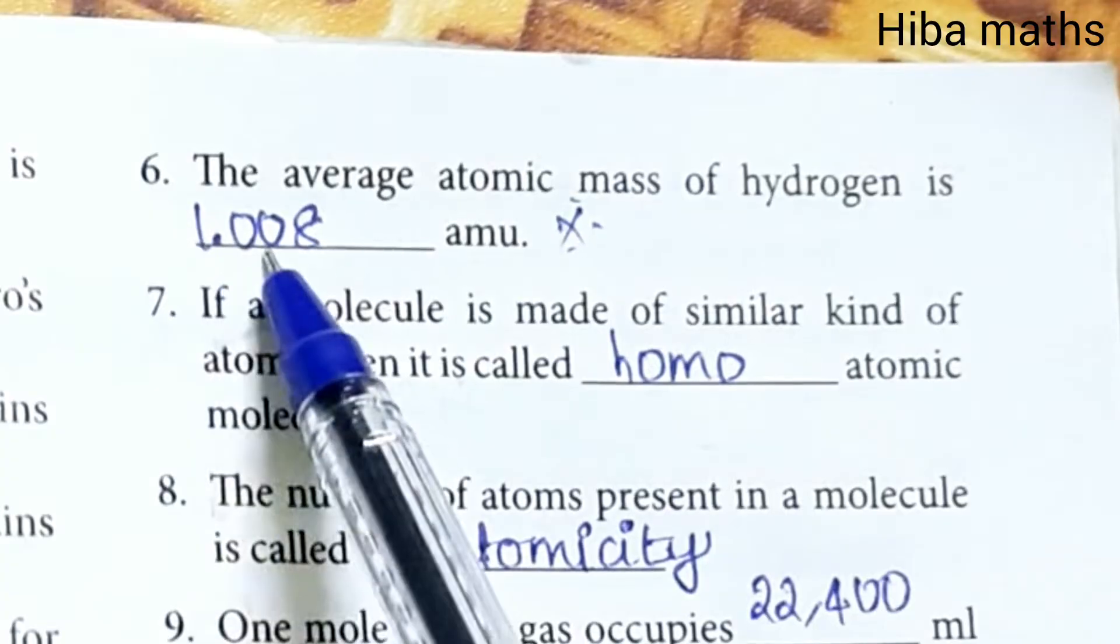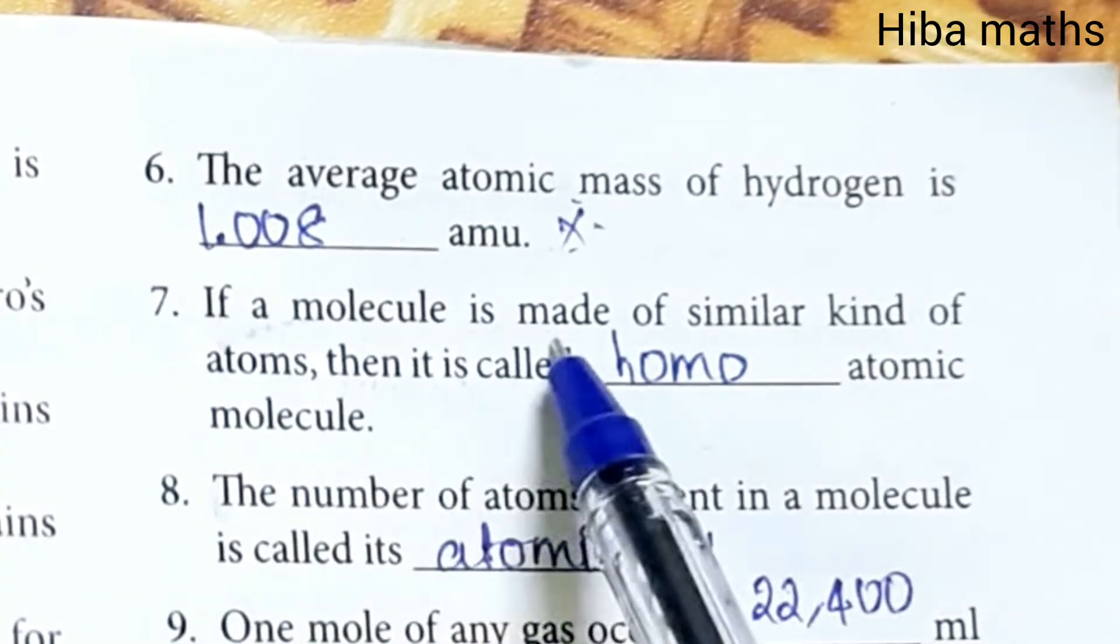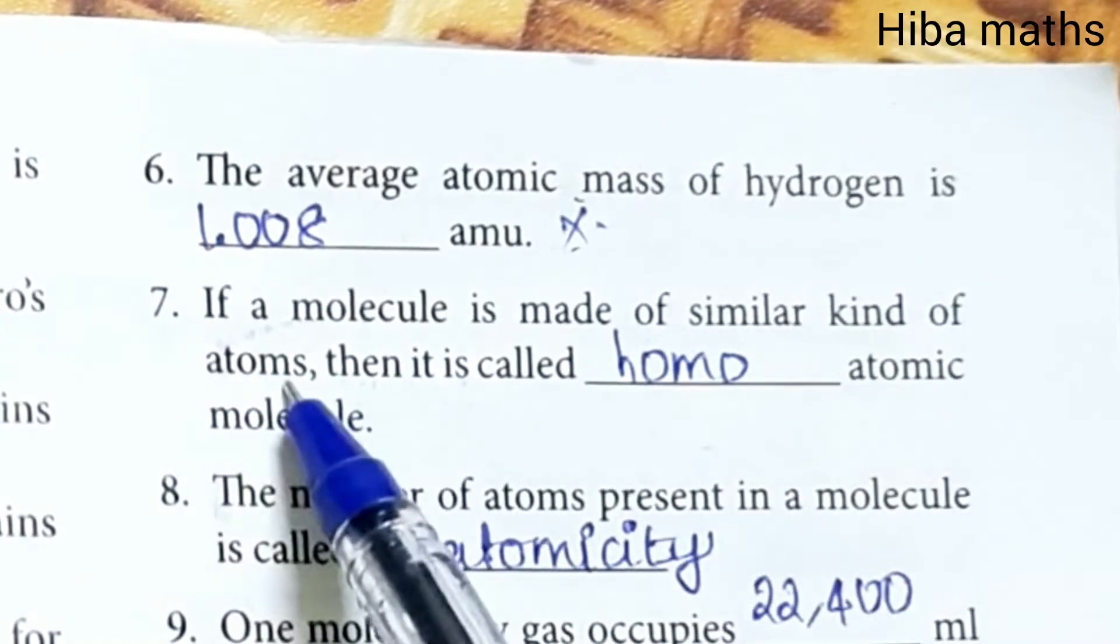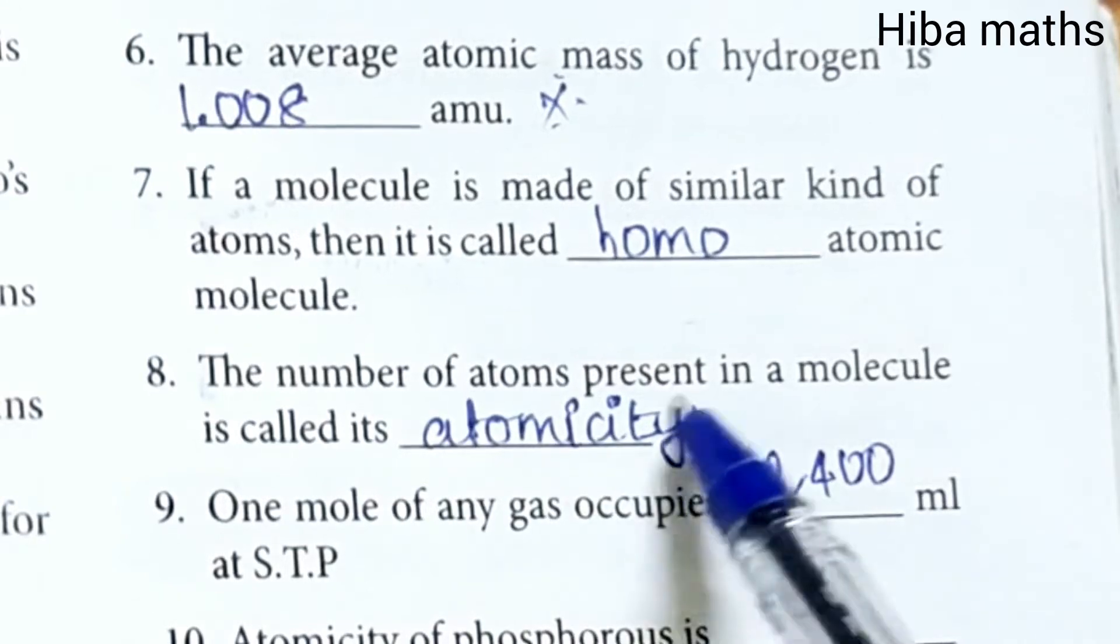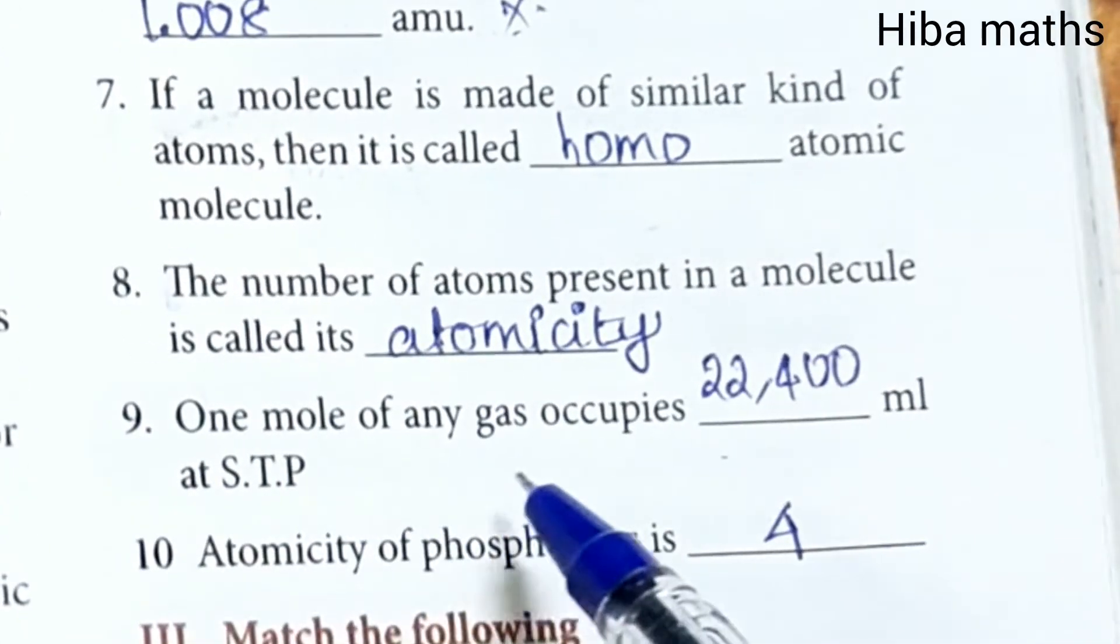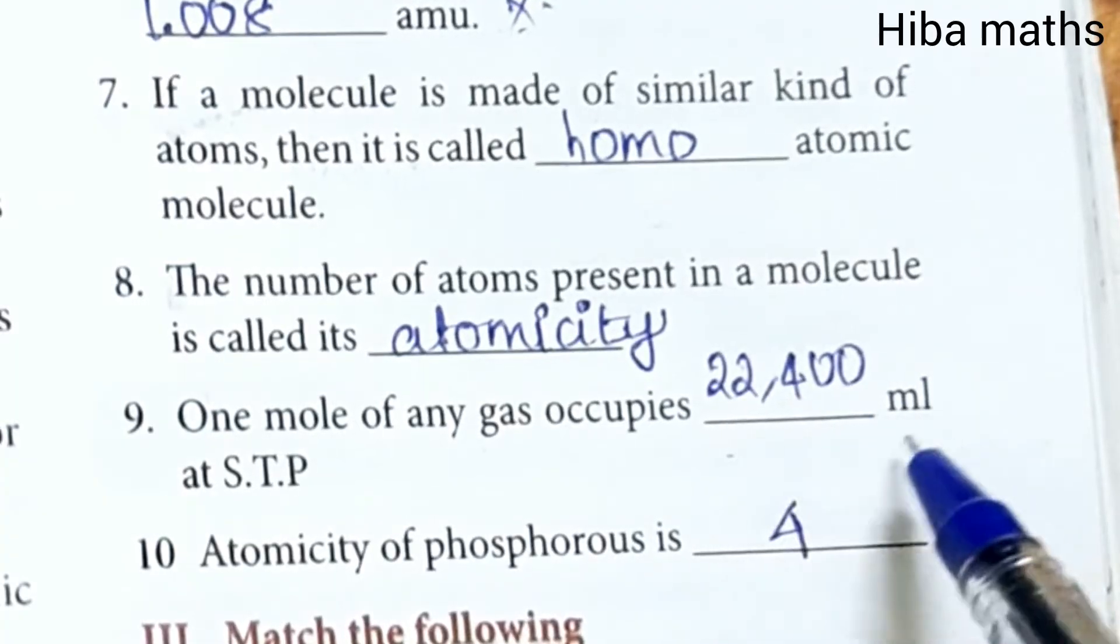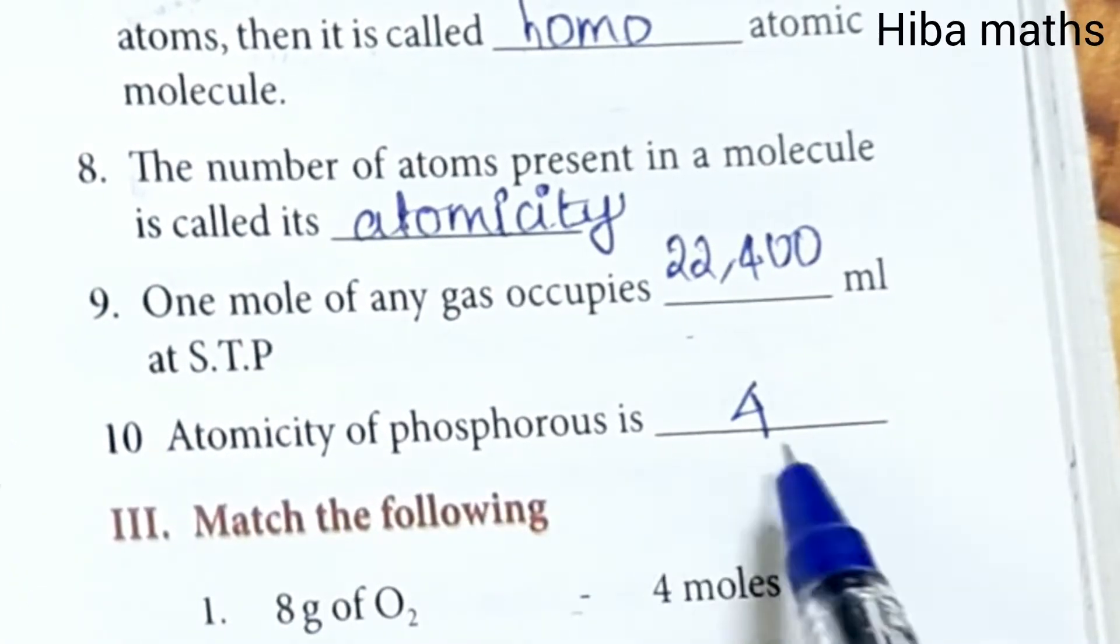The average atomic mass of hydrogen is 1.008 amu. If a molecule is made of similar kind of atoms, then it is called homoatomic molecule. The number of atoms present in a molecule is called atomicity. One mole of any gas occupies 22,400 ml at STP. Atomicity of phosphorus is 4.